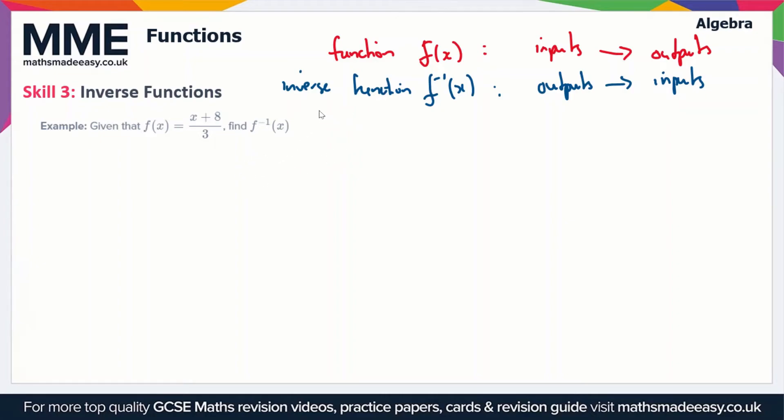So there's a specific method that we need to use in order to work out the inverse function when we're given the function in its original form. So in this example it says that given that f(x) is equal to (x + 8)/3, find f⁻¹(x). So the first thing we're going to do is set this equal to y.